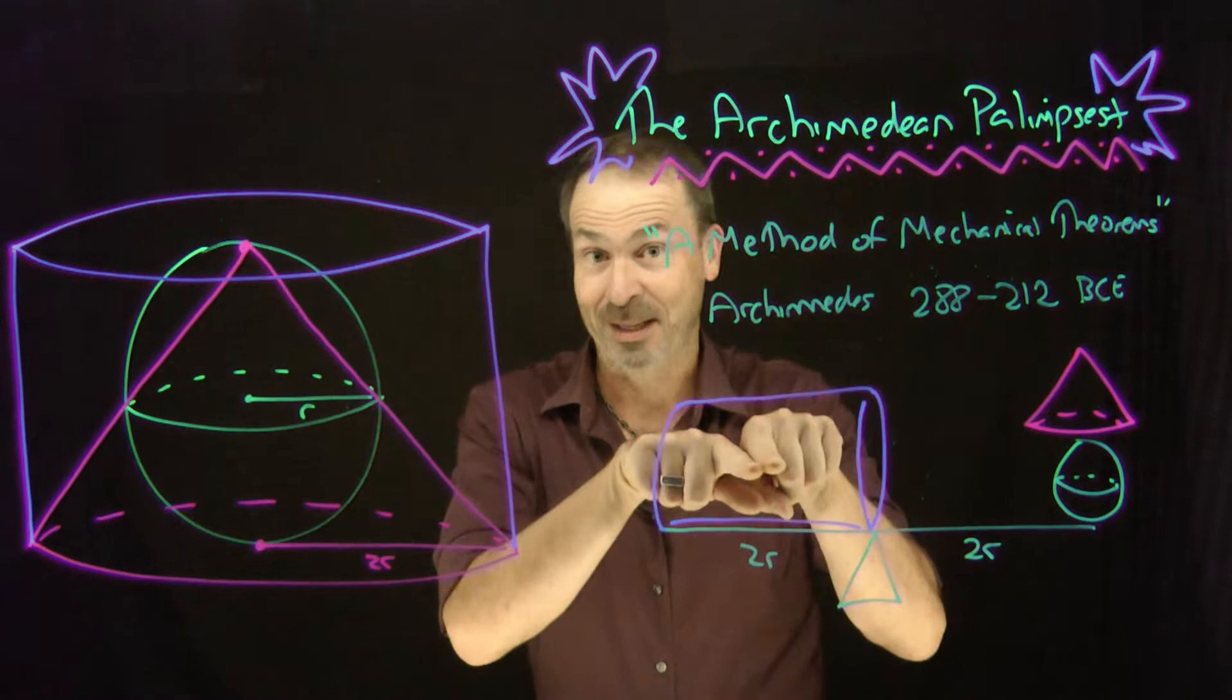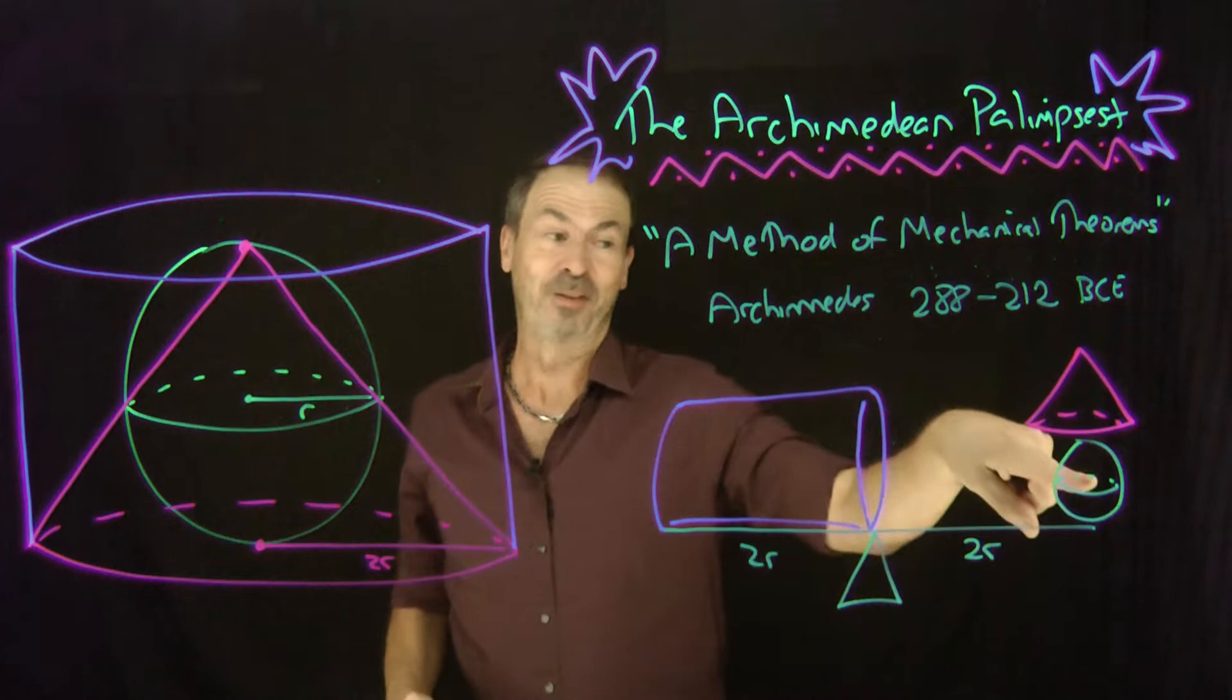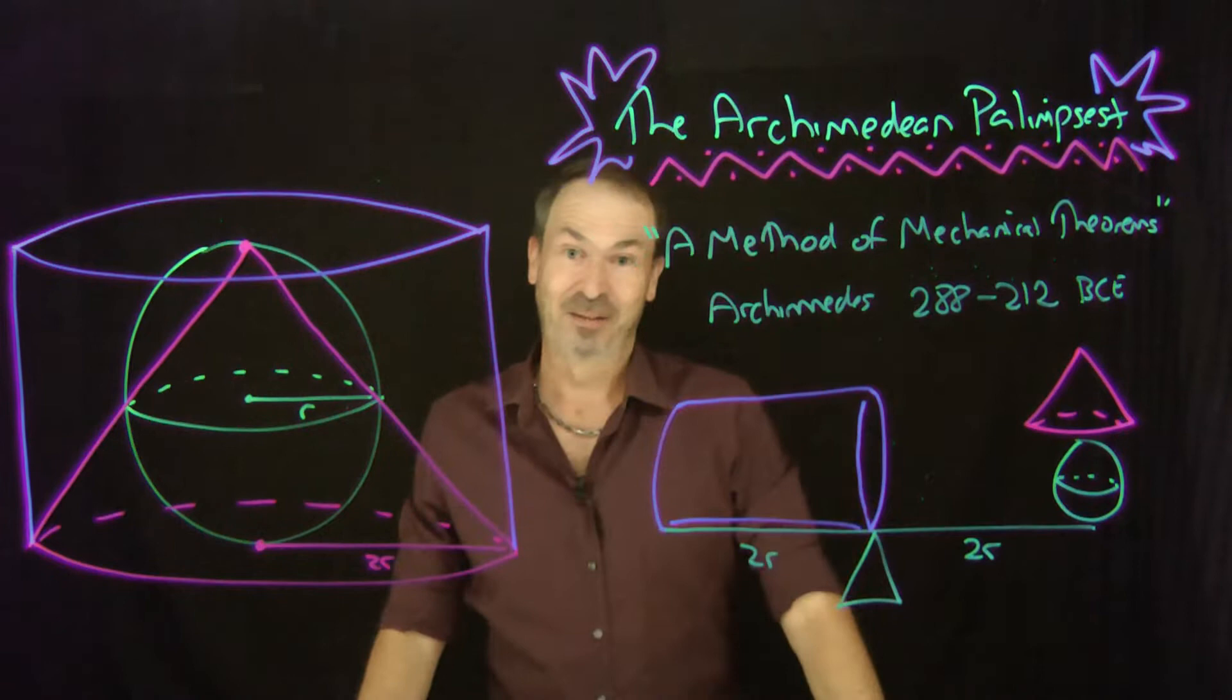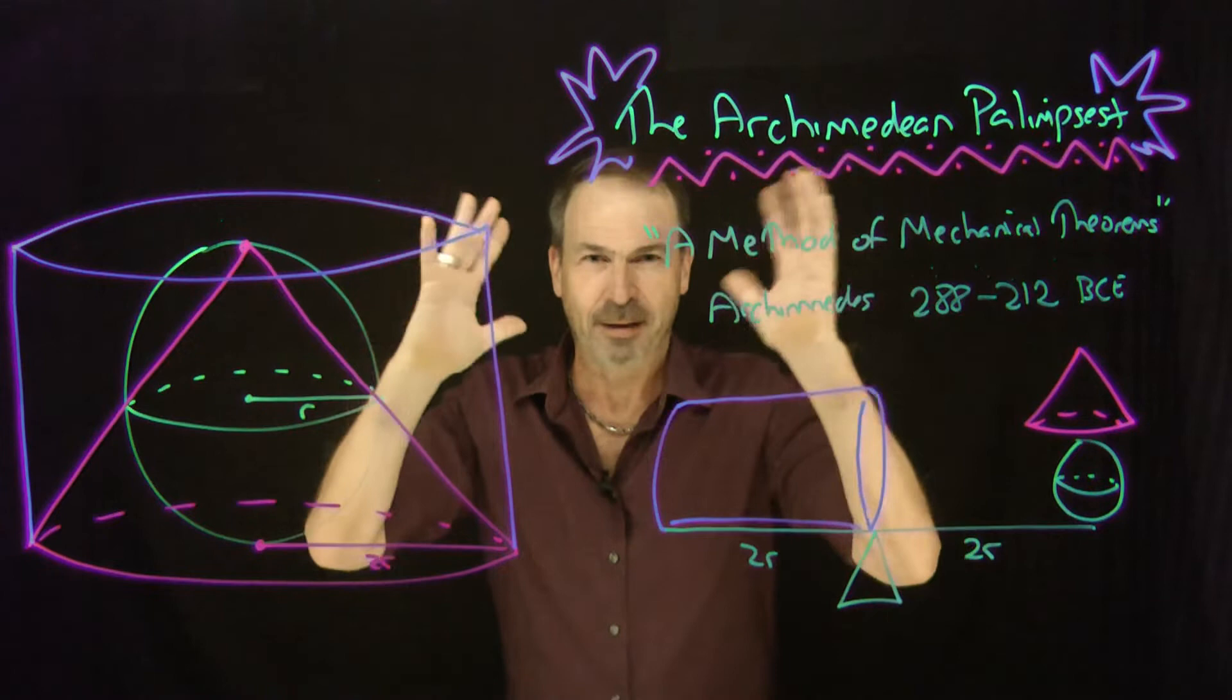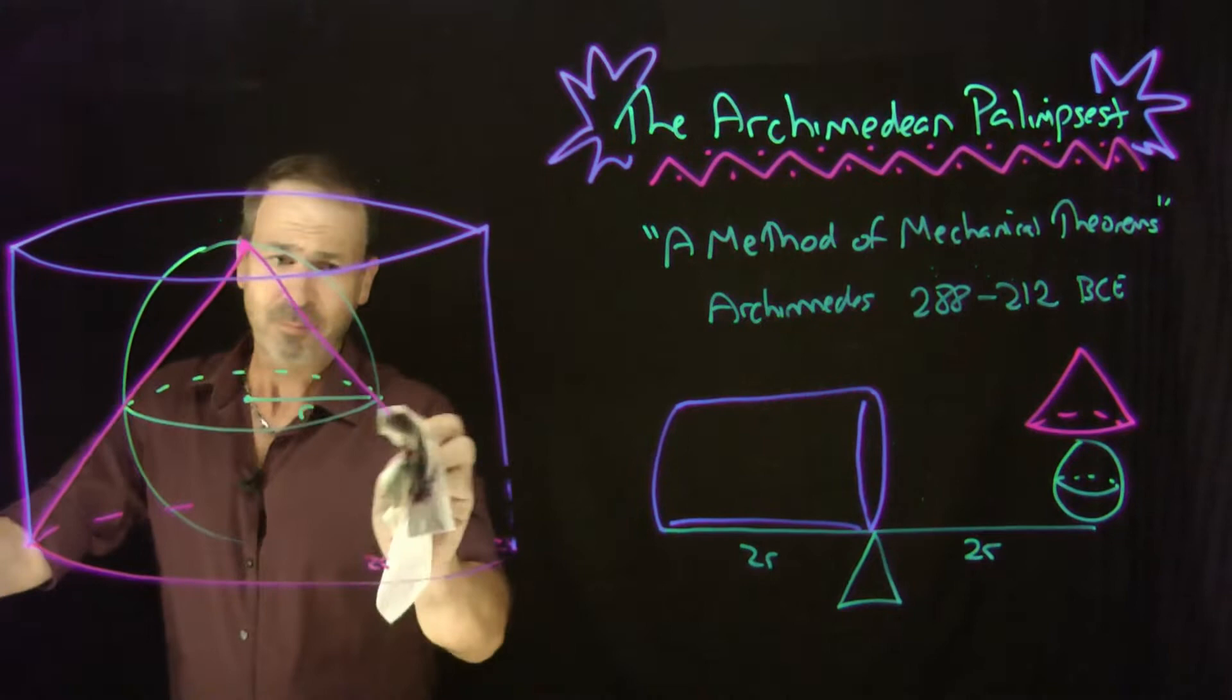He managed to prove that these three solids balance perfectly this way. He knew the volume of this, the formula for the volume of a cylinder. He knew the volume for the volume of a cone. He didn't know the volume for the volume of a sphere. But because he knew everything balanced like this, he deduced the volume of a sphere. That's what I want to talk about today.